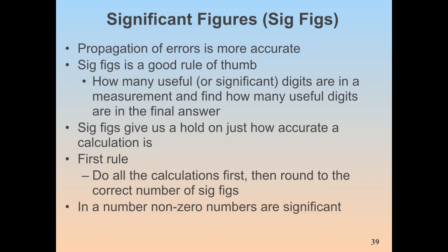When looking at significant figures in a number, all the non-zero digits — 1 through 9 — are significant. Now we're going to look at zeros, which are a bit tricky because they have their own rules depending on where they're located in the number.